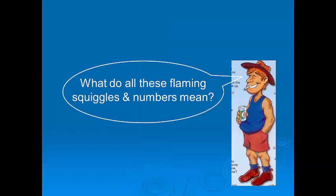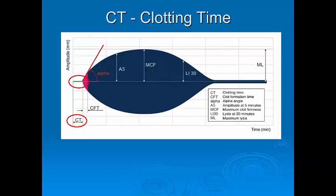There are many different parameters which can be measured. We are only going to discuss the important ones which are commonly used to make decisions in clinical practice. The CT or clotting time is measured in seconds, and this represents the time from when the test is first started until the amplitude of the temogram reaches 2mm. In simple terms, this tells us how good the initiation of clot formation is.